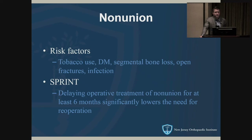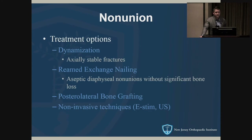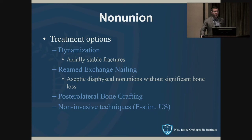The SPRINT study retrospectively looked at patients who had intervention for nonunion and found that waiting more than six months significantly decreased the need for intervention. Options for nonunion include dynamization for axially stable fractures, reamed exchange nailing — very effective when there's no evidence of infection — and cortical bone grafting, which has been shown to be very safe and effective for bone defects with a very low complication rate.